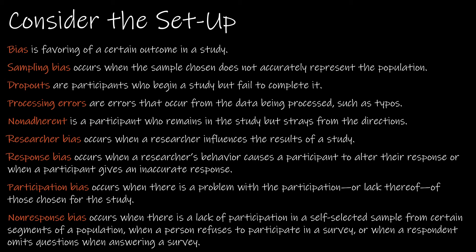We should also consider the setup, and this applies to an experiment or an observational study. We should be looking at bias — bias is favoring a certain outcome in a study. One type of bias is sampling bias, and that's when the sample doesn't accurately represent the population. For example, a study on kindergarteners taking vitamins and the effect when they reach high school needs to include kindergarteners of all socioeconomic levels, all genders, all races.